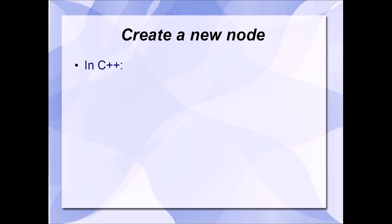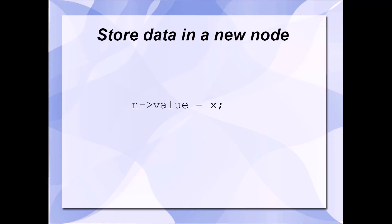So how do we create a new node? In C++, we could write code that looks like this. Here we're using dynamic memory allocation to create our new node: node* end = new node. The new operator is going to return the memory address of our brand new node, and we'll store that memory address in the node pointer named end. Now we're going to need to store data within the new node. Here's a statement that dereferences pointer end to access the value member of the node structure. We've assigned it some value x.